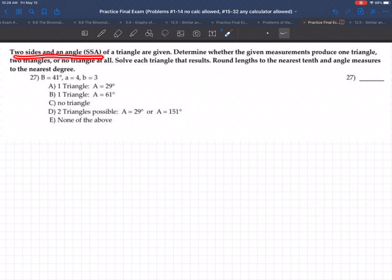Two sides and an angle of a triangle are given. Determine whether the given measurements produce one triangle, two, or no triangle at all. Solve the triangle's results.